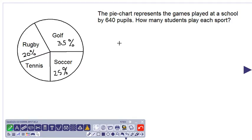Hello, let us look at this question involving a pie chart. We are given percentages in each sector of the pie chart and we are asked how many students play each sport. We are given the total amount of students as 640.